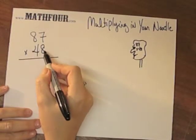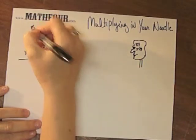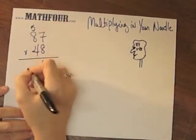87 times 48. The normal way we do this is we do 8 times 7 is 56, carry the 5. 8 times 8 is 64, plus 5 is 69.